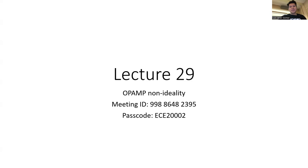All right, I'm going to get started. This is lecture 29, and today we're going to continue talking about op amps. We're going to talk about what happens when you assume that the op amp is non-ideal, and we're also going to go over some examples. So that's today's topic.